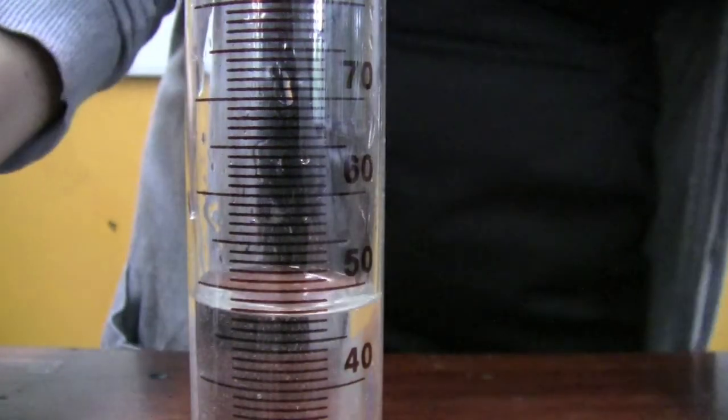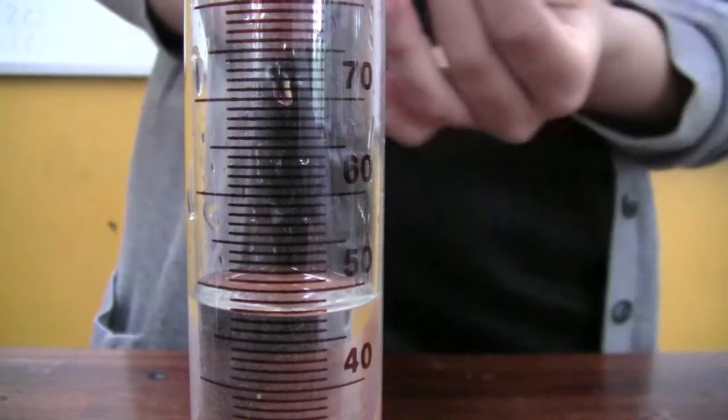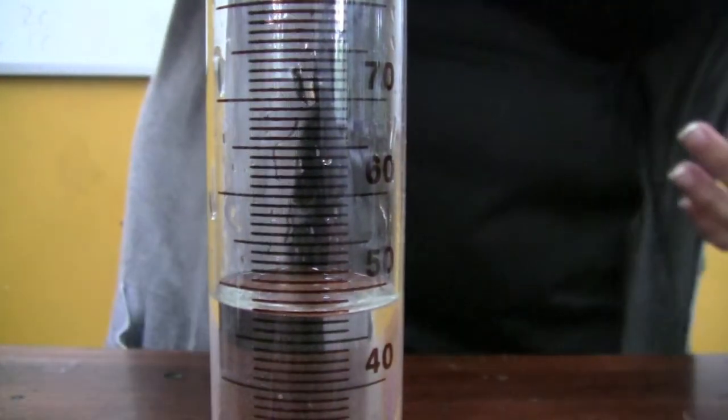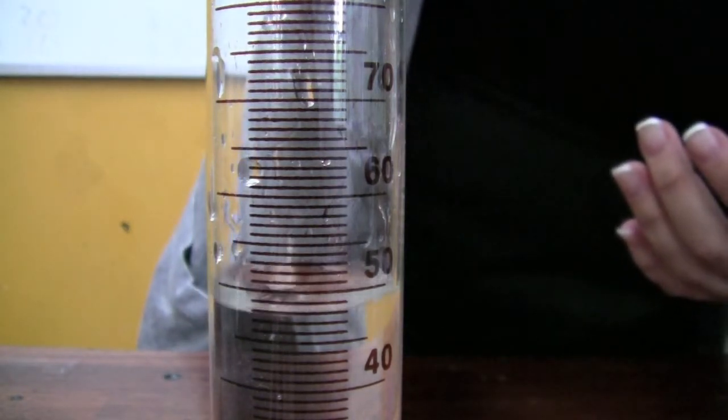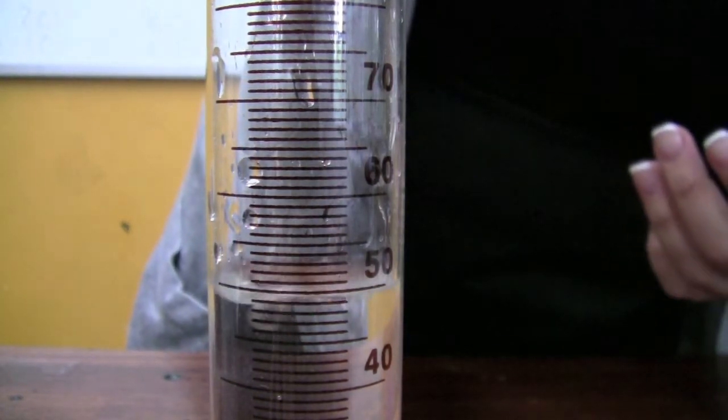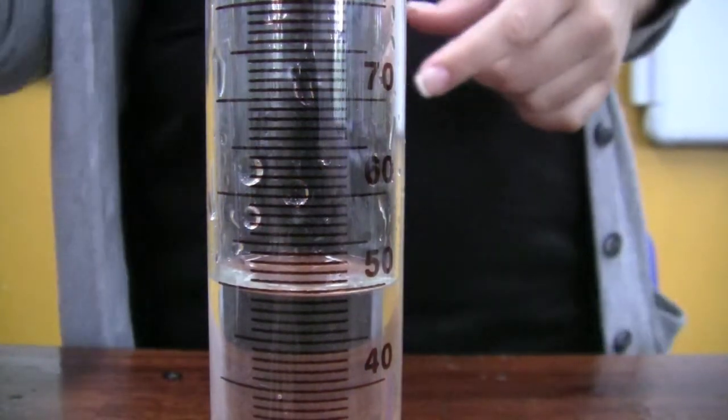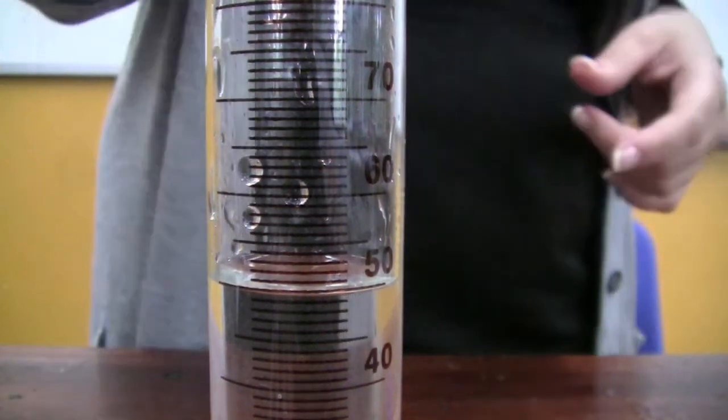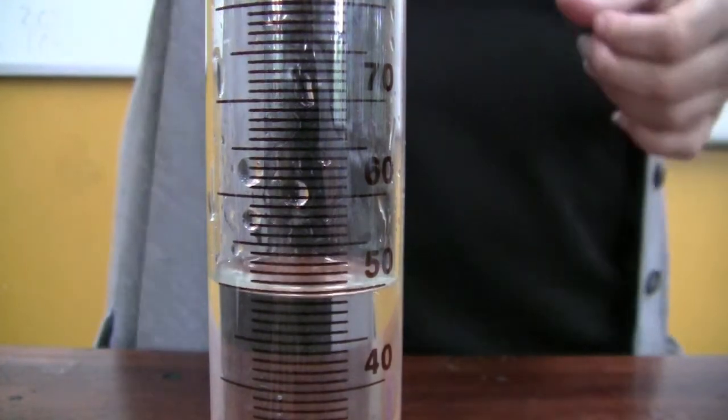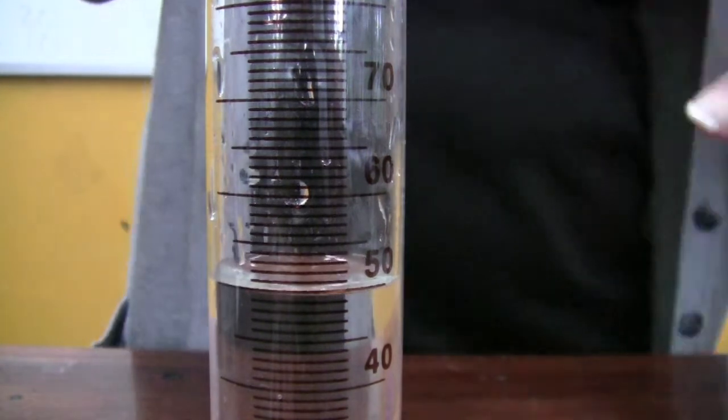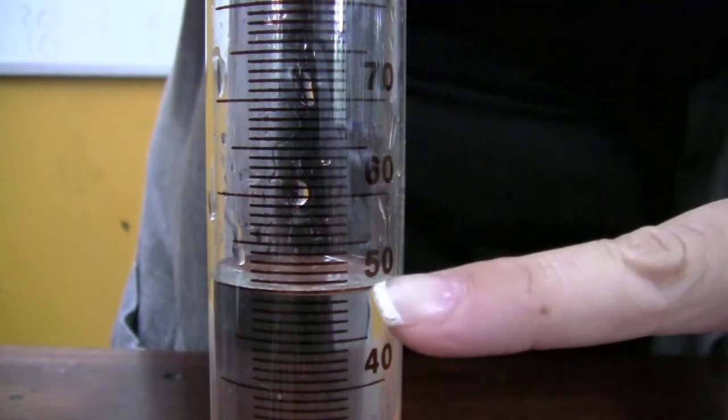When I get close to 50, I'm going to stop and use the pipette. And put it in carefully, drop by drop, until the meniscus is in line with the measurement on the side, with the gradient at the side.